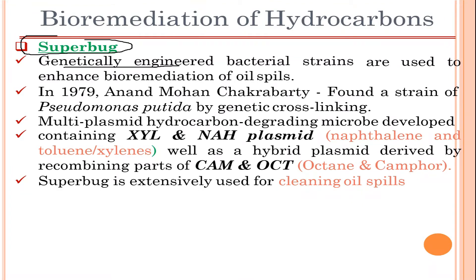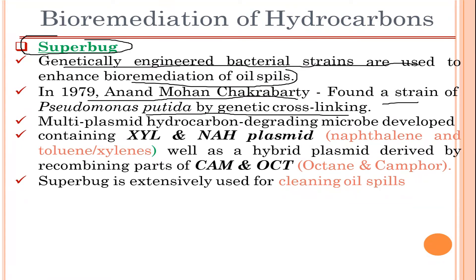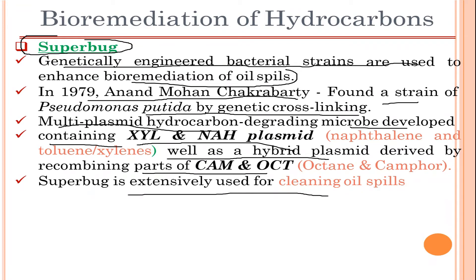A superbug is a genetically engineered bacterial strain used to enhance bioremediation of oil spills. In 1979, Ananda Mohan Chakrabarti developed a strain of Pseudomonas putida by genetic cross-linking. This multi-plasmid hydrocarbon-degrading microbe contains xyl, nah, and a hybrid plasmid derived by recombining parts of the camphor and octane plasmids. The superbug is extensively used for cleaning oil spills.